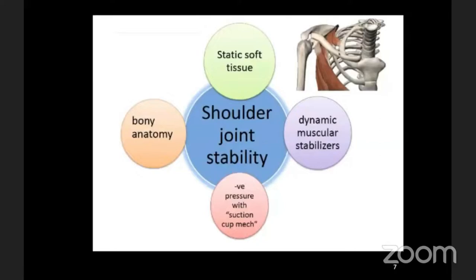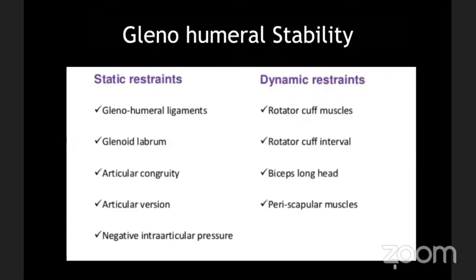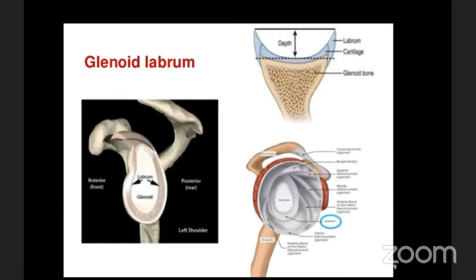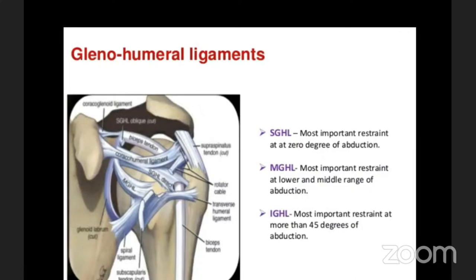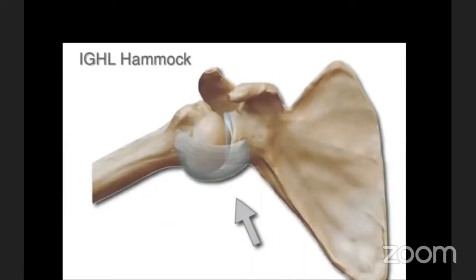Glenohumeral stability is maintained by static and dynamic structures. The static structures are the glenohumeral ligament, the labrum, articular congruity, and intraarticular negative pressure. The dynamic restraints are the rotator cuff, rotator interval, the biceps, and periscapular muscles. The glenoid is concave and given more depth by the labrum and glenohumeral ligament. The most important static structure is the inferior glenohumeral ligament, which acts as a hammock along with the capsule.